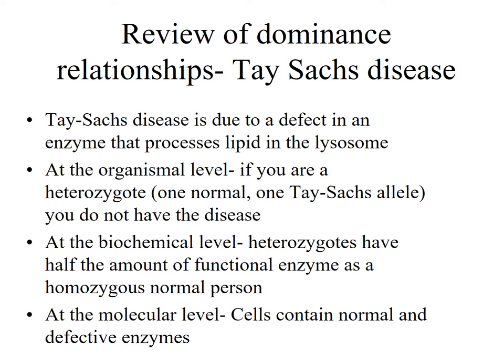Let's review these dominance relationships by looking at Tay-Sachs disease. Tay-Sachs is a lysosomal disorder — it's a disorder of an enzyme in the lysosome. The gene encodes an enzyme that when defective does not allow the breakdown of a lipid, and the accumulation of that lipid specifically in neurons leads to the death of a child by age two. If we look at just the disease at the organismal level, it shows complete dominance, because the heterozygote — having one normal and one Tay-Sachs allele — would be normal. In other words, normal is completely dominant to Tay-Sachs.